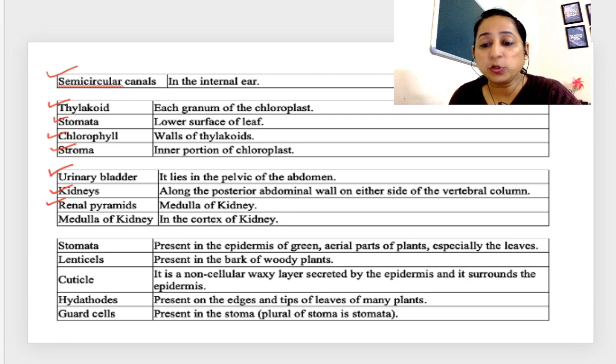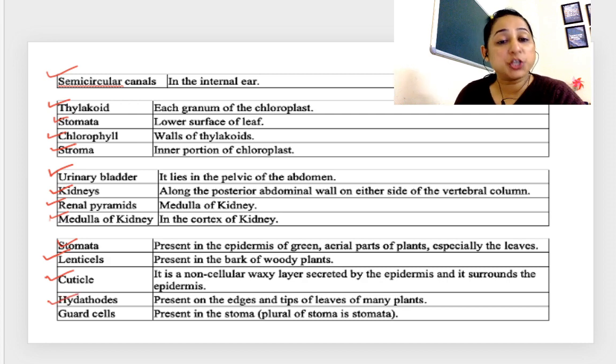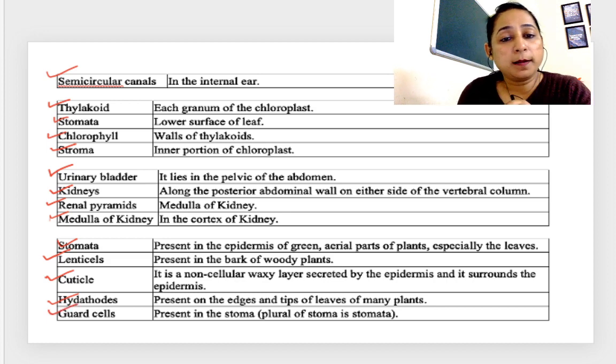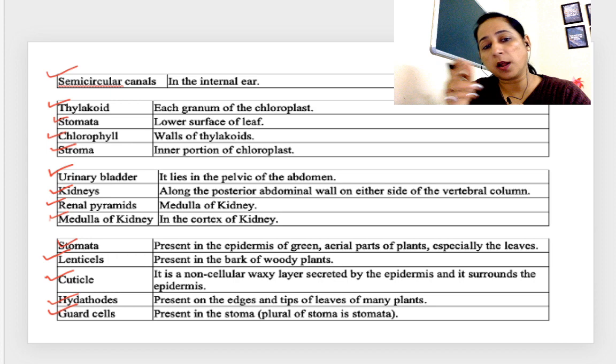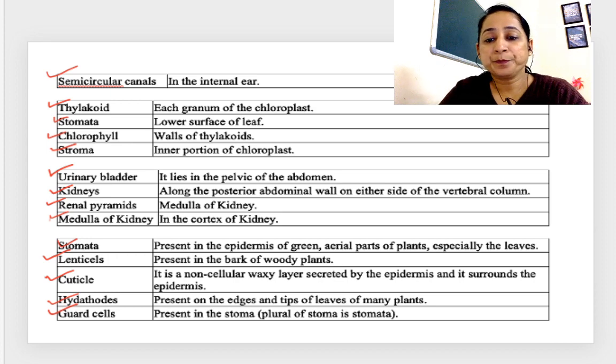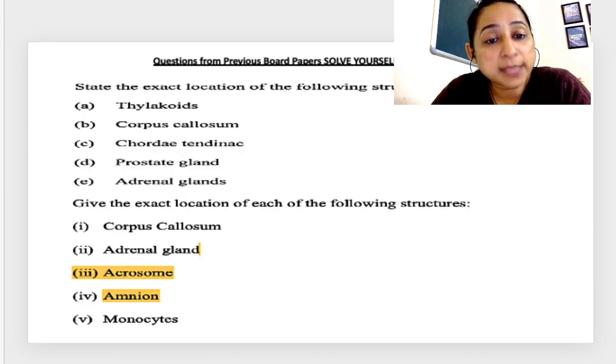Stomata, present in the epidermis of the green aerial parts. Lenticels, present in the bark of woody stem. Cuticle and stomata are important. Cuticle, present over the epidermis. Hydathodes, present in the edges of the tip side or margins of the leaves. Guard cells, present around the stomata.